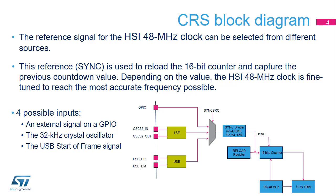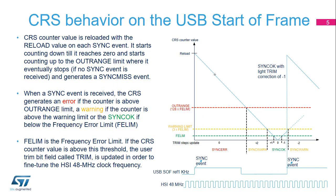This reference signal, called sync, is used to reload the 16-bit counter and capture the value of the actual countdown. Depending on this value, the HSI 48 MHz clock frequency, or HSI48, is fine-tuned to reach the most accurate frequency. The CRS counter value is reloaded with the reload value on each sync event.